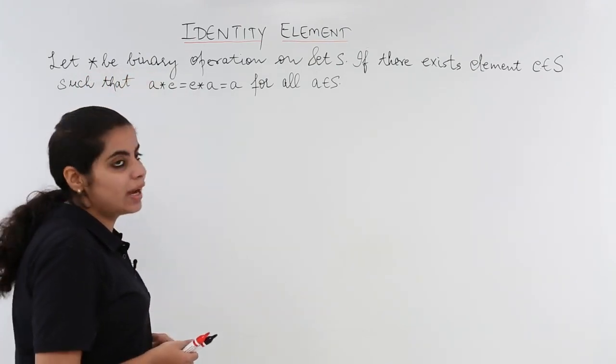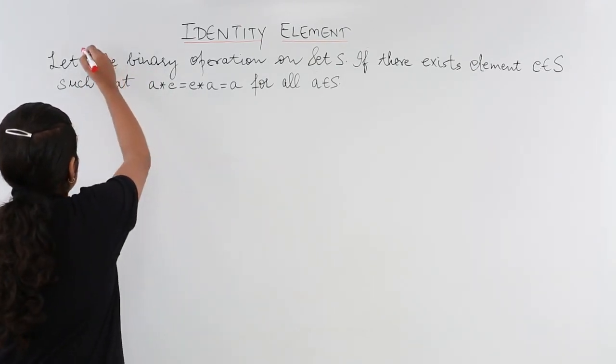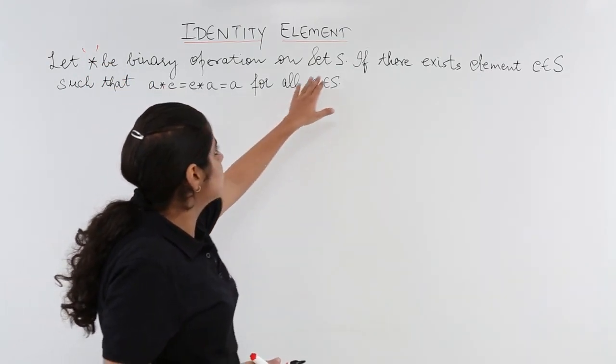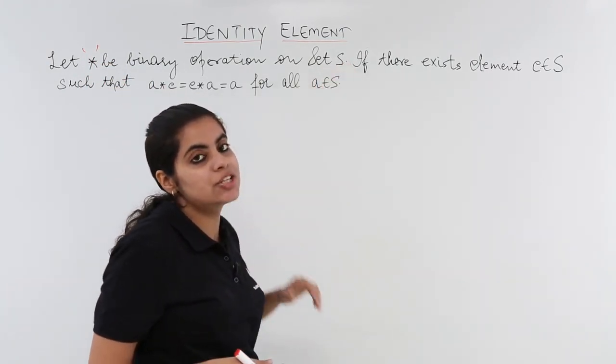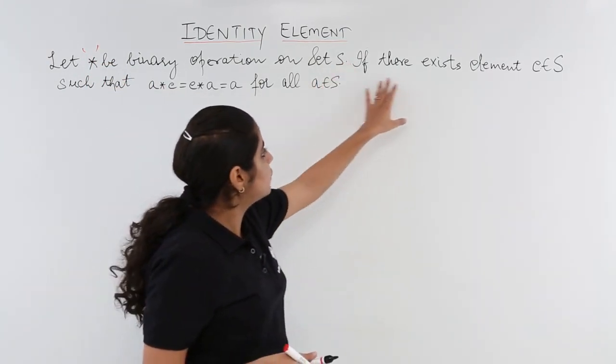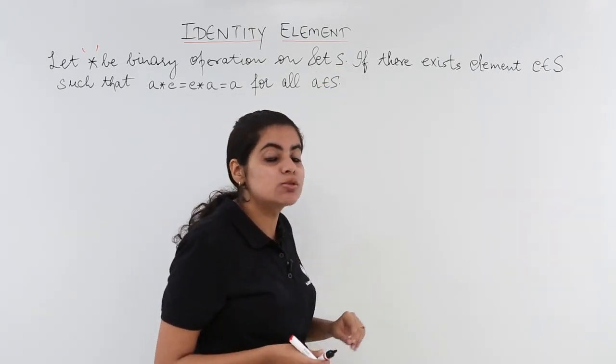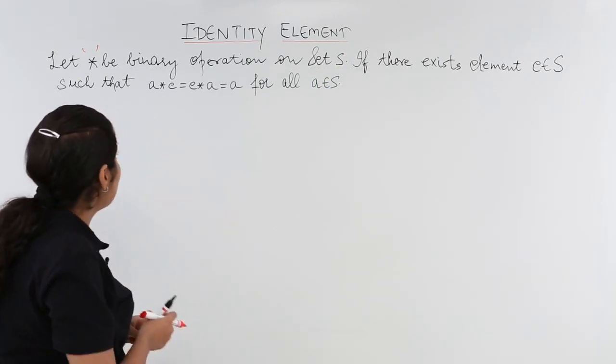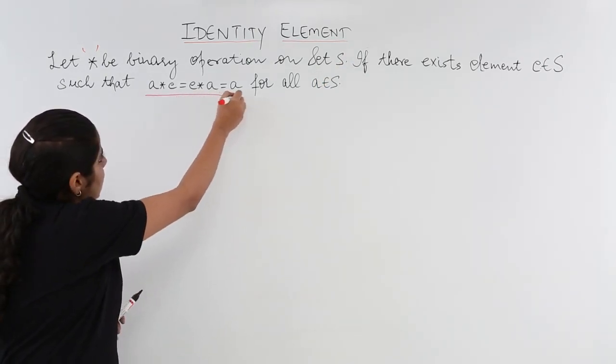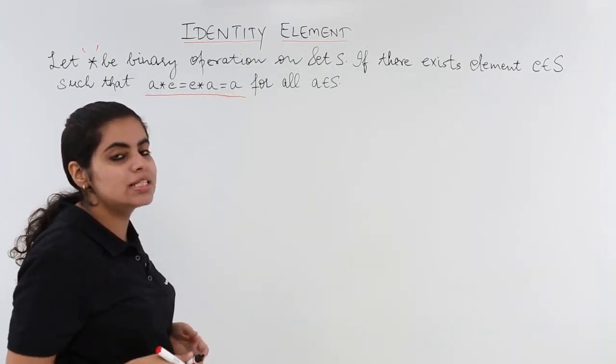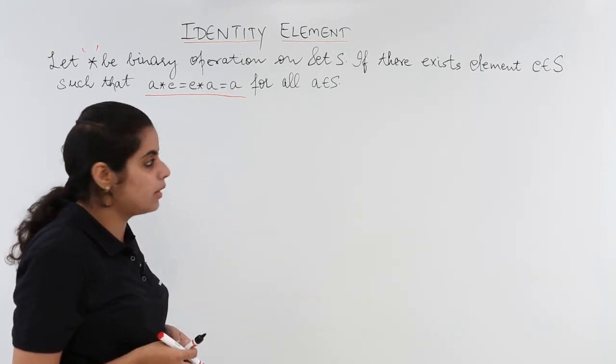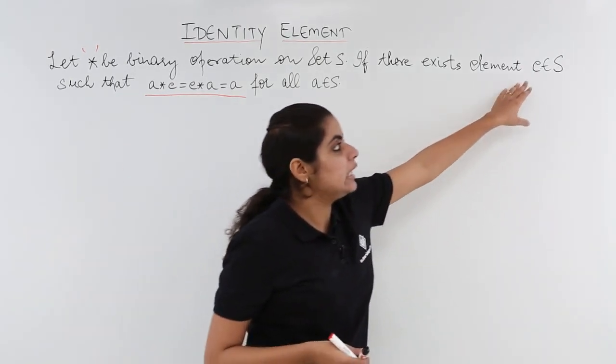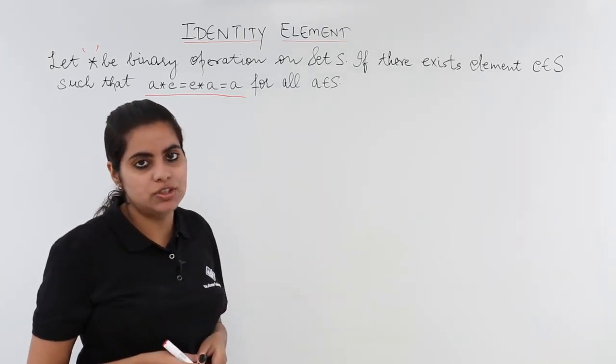Let star be a binary operation. So a binary operation is given as star and the set we are involving is set capital S. If there exists an element small e which belongs to the same set and this definition is followed: a star e is equal to e star a is equal to a, then we say that the element e is called the identity element.